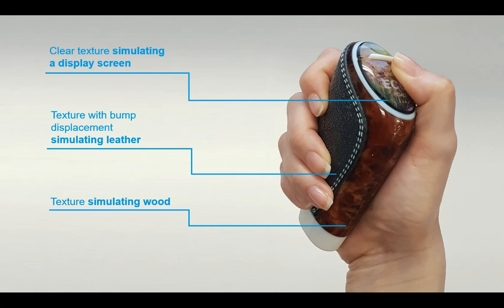We've got first a clear texture that simulates a display screen. This is an element that incorporates a graphic image and an element of clear to simulate the screen. Then below that we have a texture with bump displacement simulating leather, and then another image texture simulating a wood grain effect.